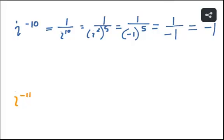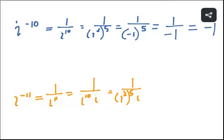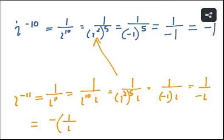Finally, for i⁻¹¹, we write it as 1/i¹¹ = 1/(i¹⁰ · i). We know i¹⁰ = (i²)⁵ = (−1)⁵ = −1, so we get 1/(−1 · i) = 1/(−i) = −1/i. Since 1/i = −i, we have −1 · (−i) = i. So i⁻¹¹ = i — another instance of the same four possible answers cycling through.